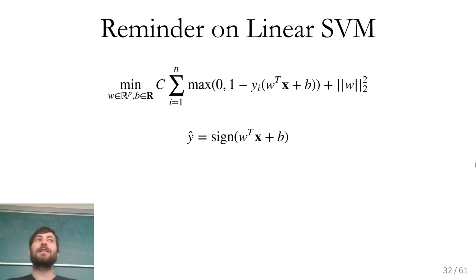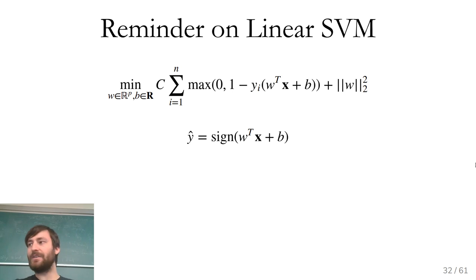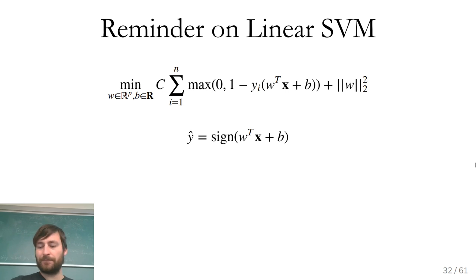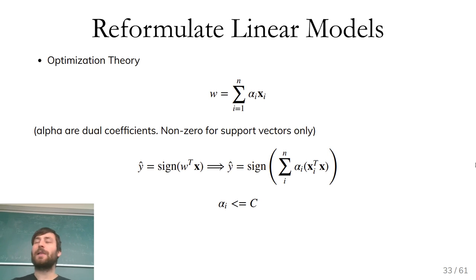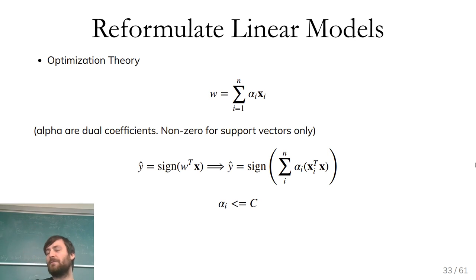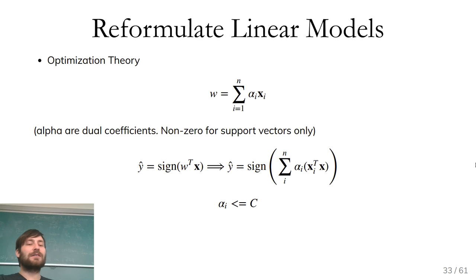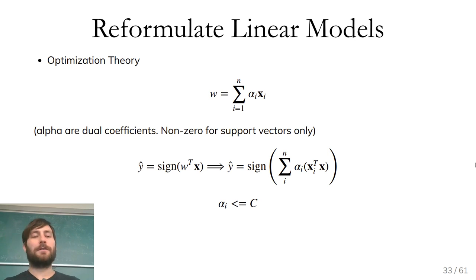Let's go back to the linear SVM. If you do some fancy optimization theory, you can find that the W vector will actually be a linear combination of the training data points with some alphas — the dual coefficients. These are non-zero only for the support vectors. So the solution only depends on the support vectors, and W can be expressed as a linear combination of the support vectors with these coefficients alpha. They have nothing to do with the alpha in ridge regression — they just happen to also be called alpha.